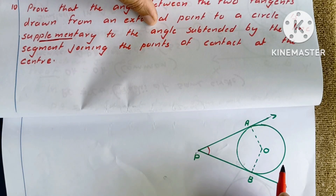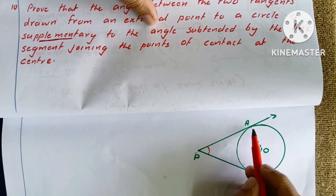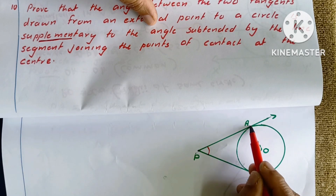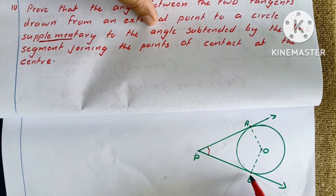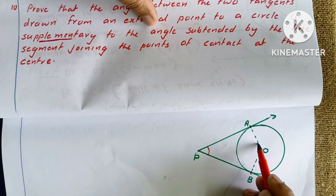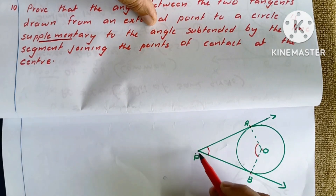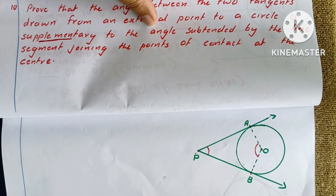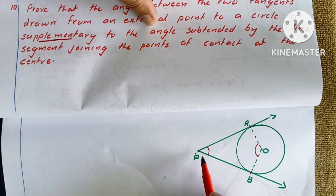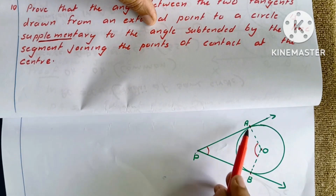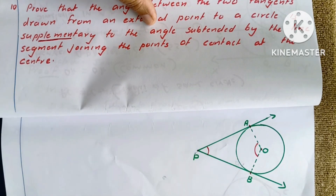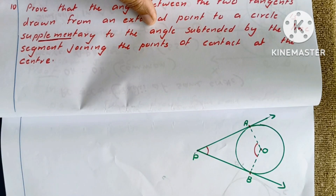The two tangents touch the circle at points A and B, which are the points of contact. The line segments from the points of contact to the centre are AO and BO. We need to prove that angles at A and B are supplementary.